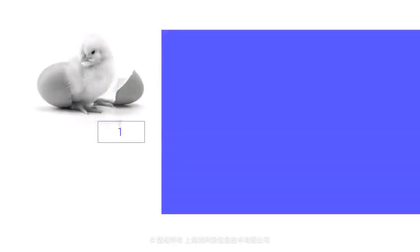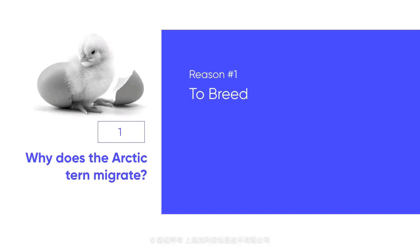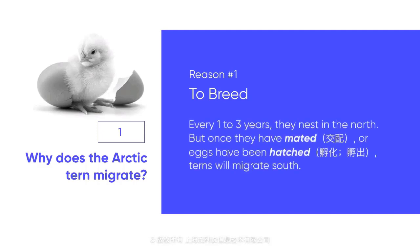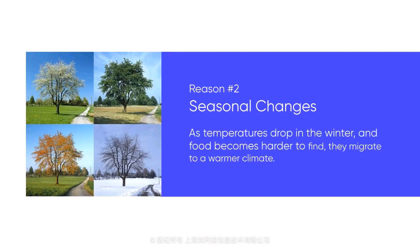So why does the Arctic tern migrate such an incredible distance twice a year? Part of the reason is to breed. Arctic terns breed in the northern parts of the Arctic, including islands and coastal regions in Alaska, Canada, and the Netherlands. Every one to three years, they nest in the north. But once they have mated or eggs have been hatched, terns will migrate south. Another reason is seasonal changes. Because they live near the poles, as temperatures drop in winter and food becomes harder to find, they migrate to a warmer climate.